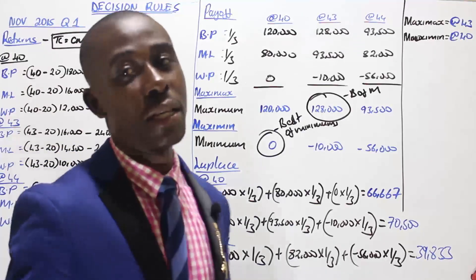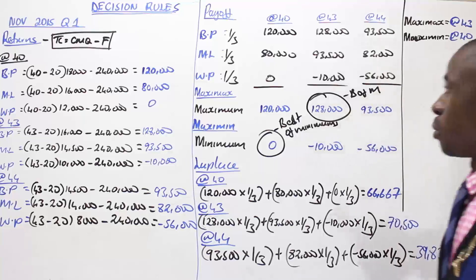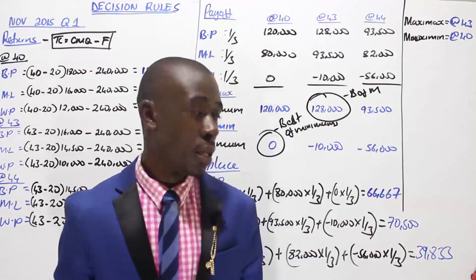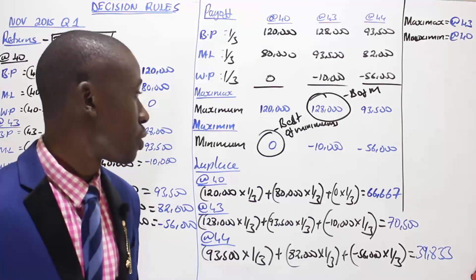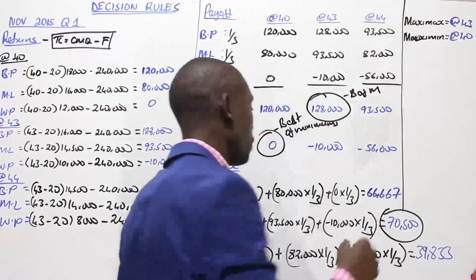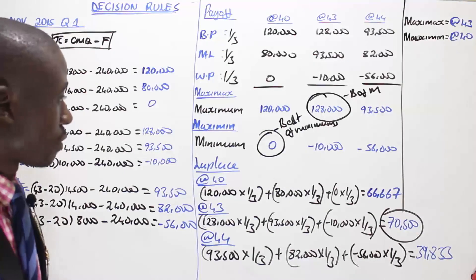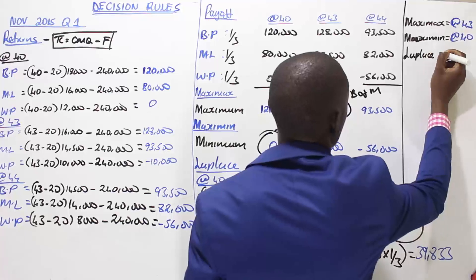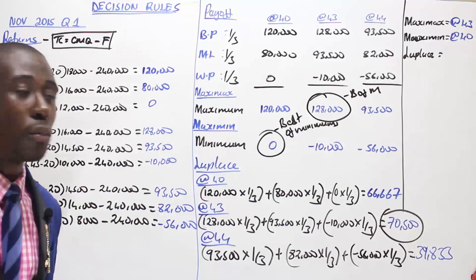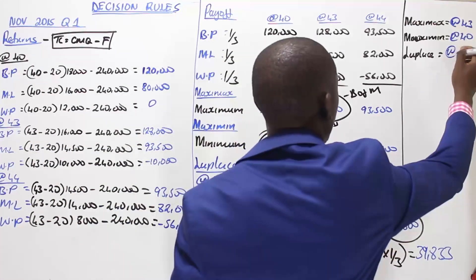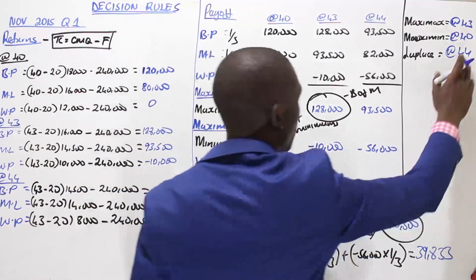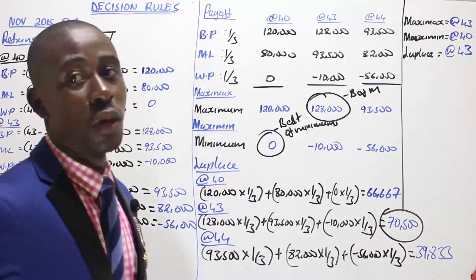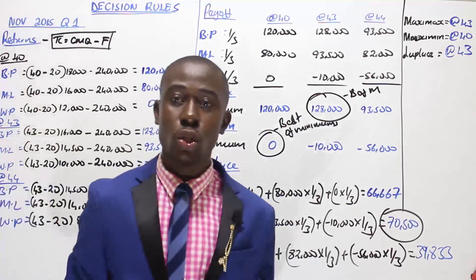We need to advise this company based on the Laplace decision criterion. Now that we have our expected returns — 66,667 at 40, 70,500 at 43, and 39,833 at 44 — we select the best expected return. The best expected return, at 70,500, lies where the price is at 43 shillings. So using the Laplace decision criterion, the company should select a price of 43 shillings.